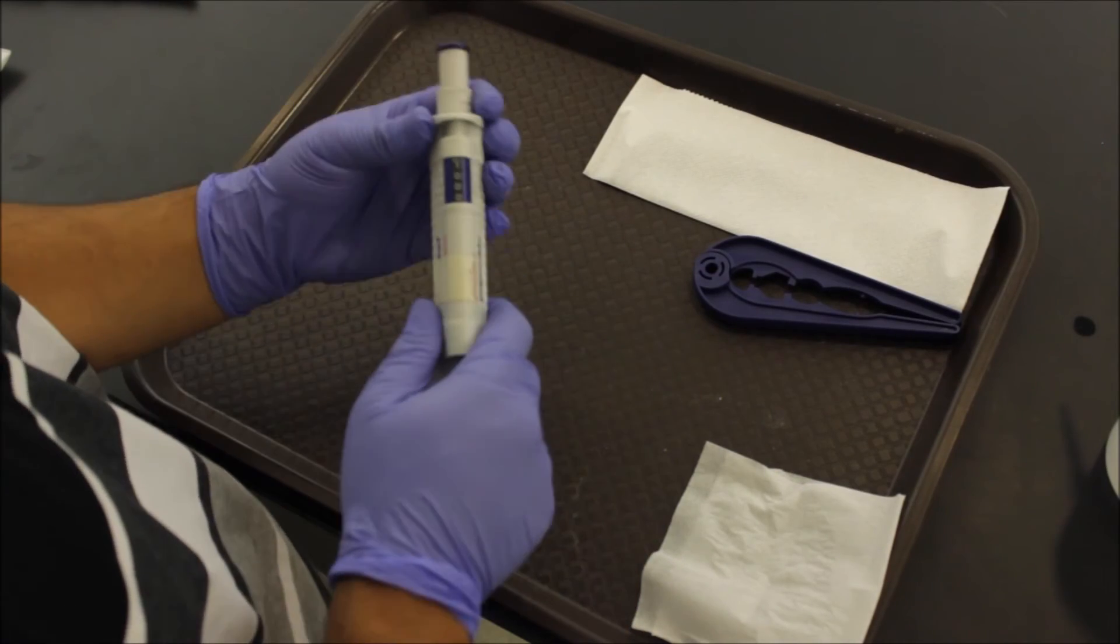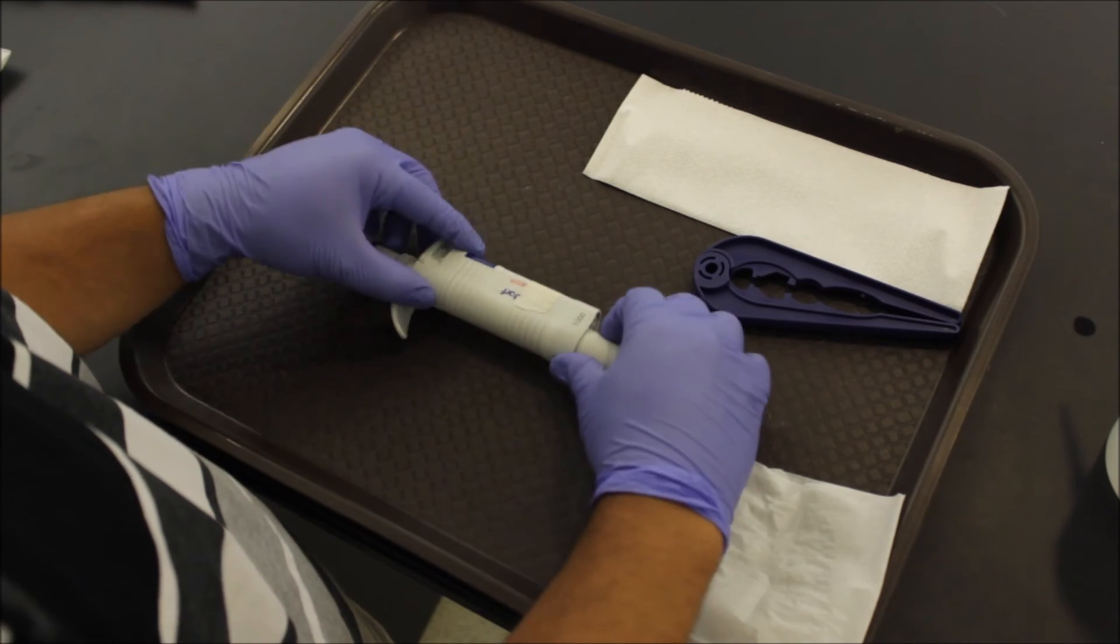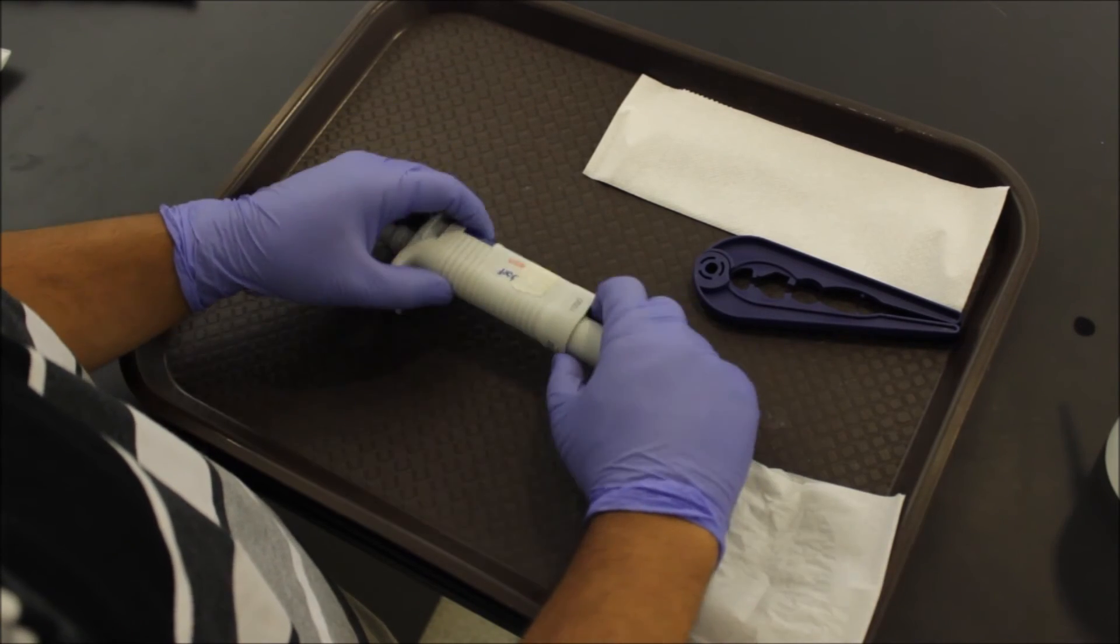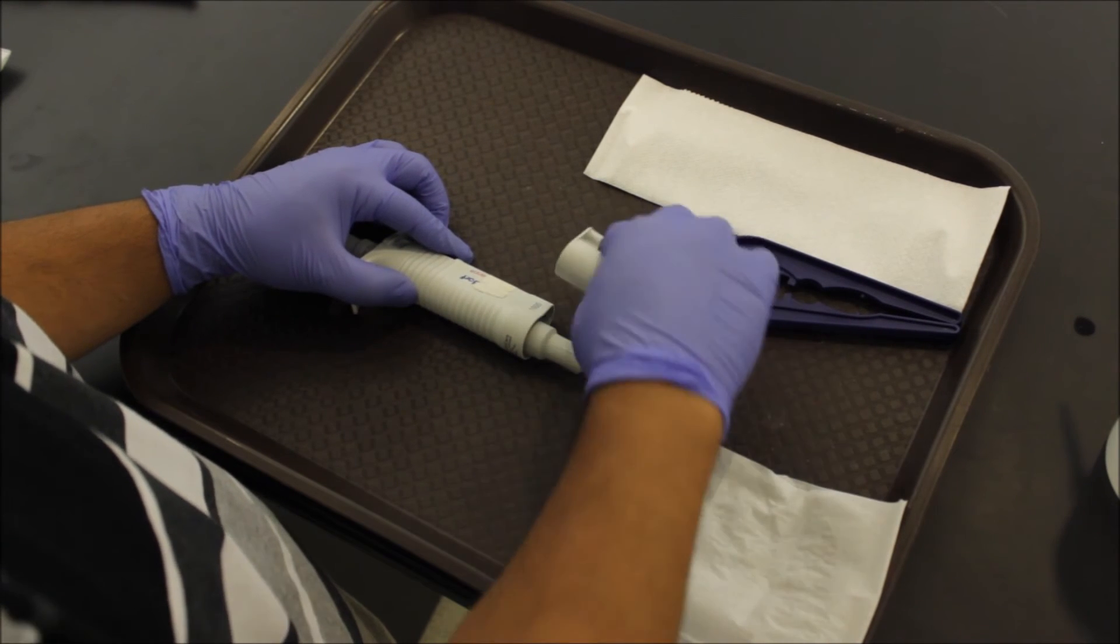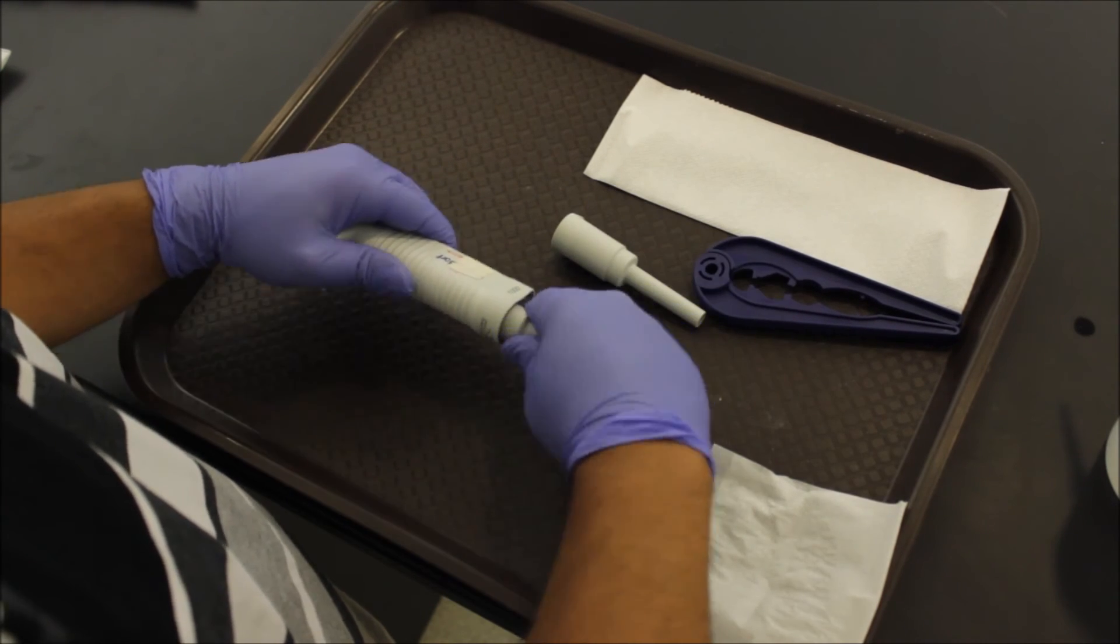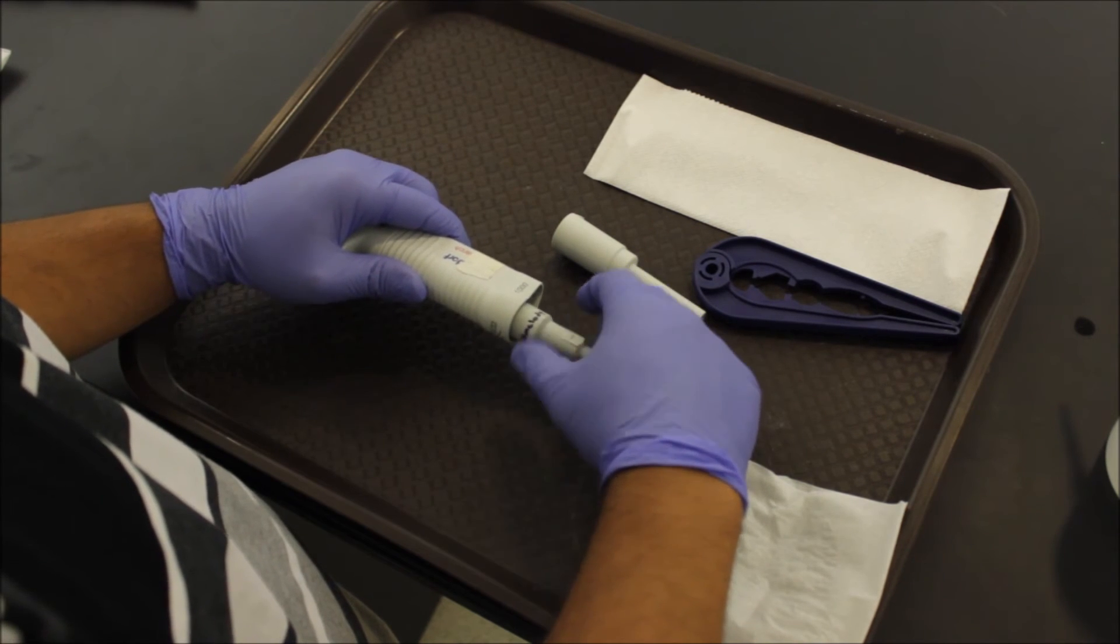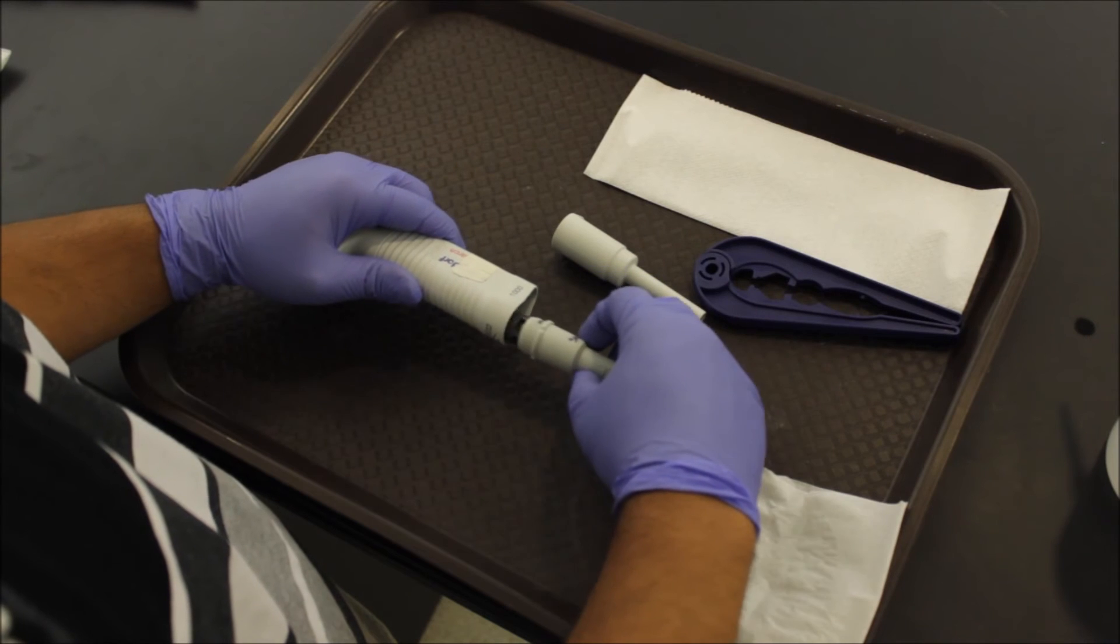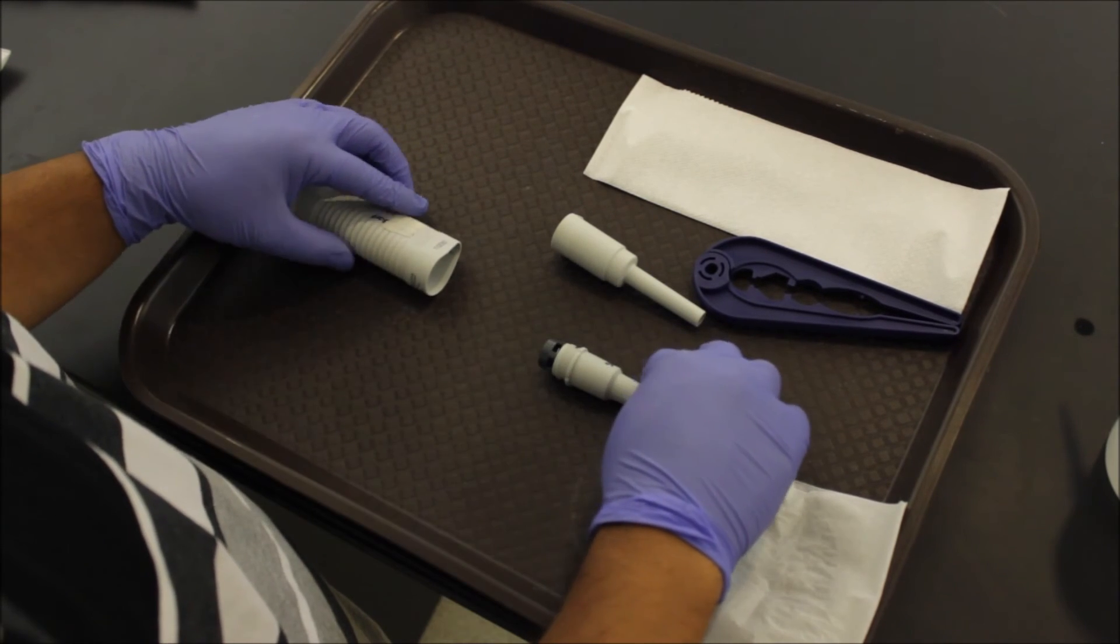All right, so here we got the Eppendorf research pipette. Slightly different. Once again, make sure your volume is set to max, which is 1,000. So we're going to slide off this outer shaft. Check that for any debris. Grab this inner core and just give that a hard twist. Slowly screw that out. Check the actual pipette for any debris.